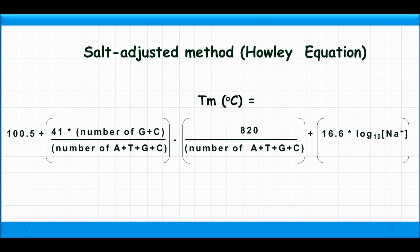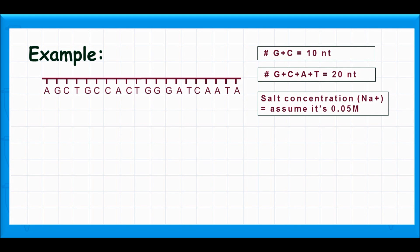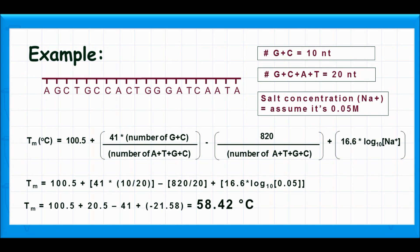The salt-adjusted method estimates the melting temperature based on primer length, the number of guanine and cytosine in the primer, and the salt concentration of the PCR reaction mixture. Let's have an example. The number of guanine and cytosine equals 10 nucleotides and the primer length equals 20 nucleotides. As for the salt concentration, assume it equals 0.05 molar. Substitute all values and do simple calculations to solve the equation.